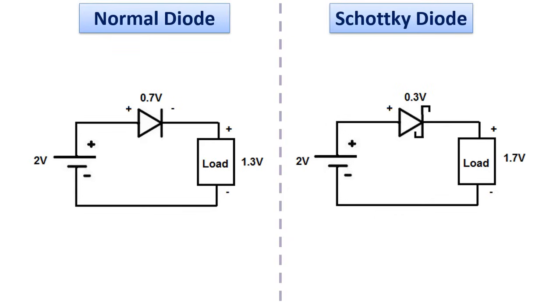In the circuit on the right, the voltage source with the same value is connected in series with the load with the Schottky diode. Considering that 0.3 volts remains on the Schottky diode, 1.7 volts will remain on the load. This very small difference is often important, especially in communication circuits.